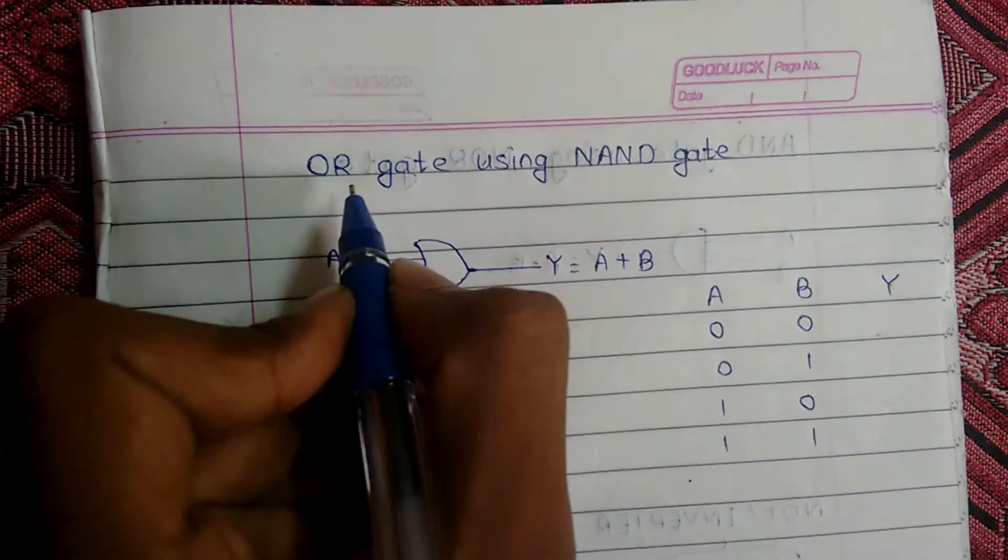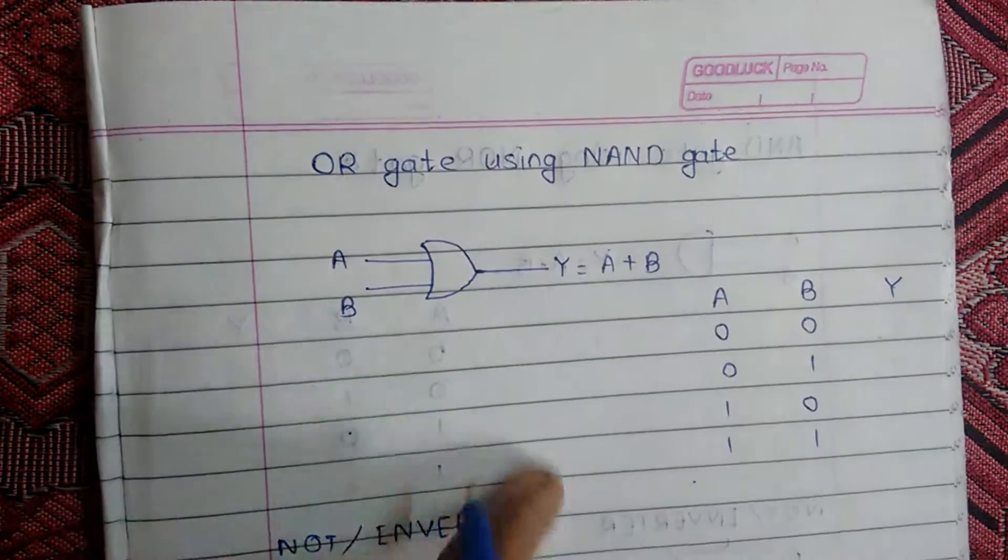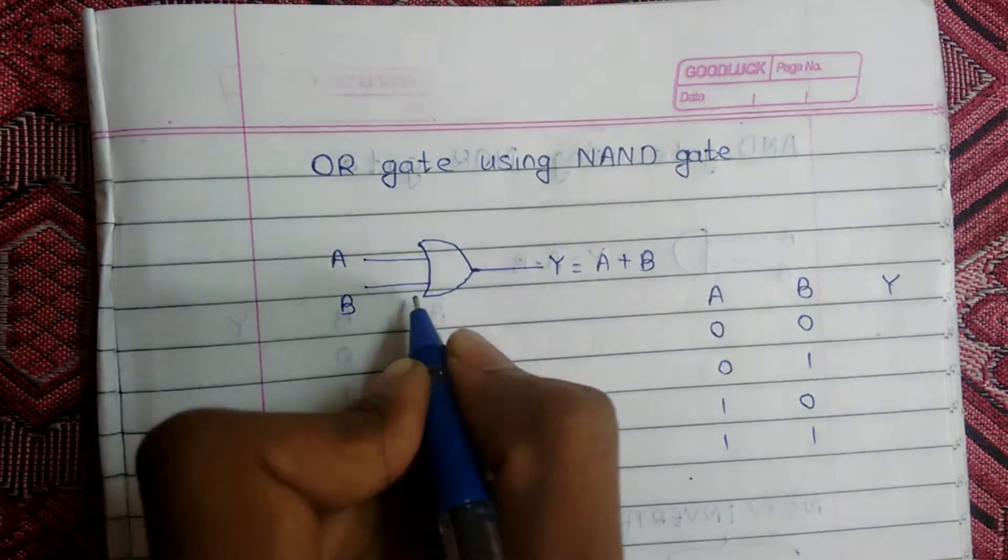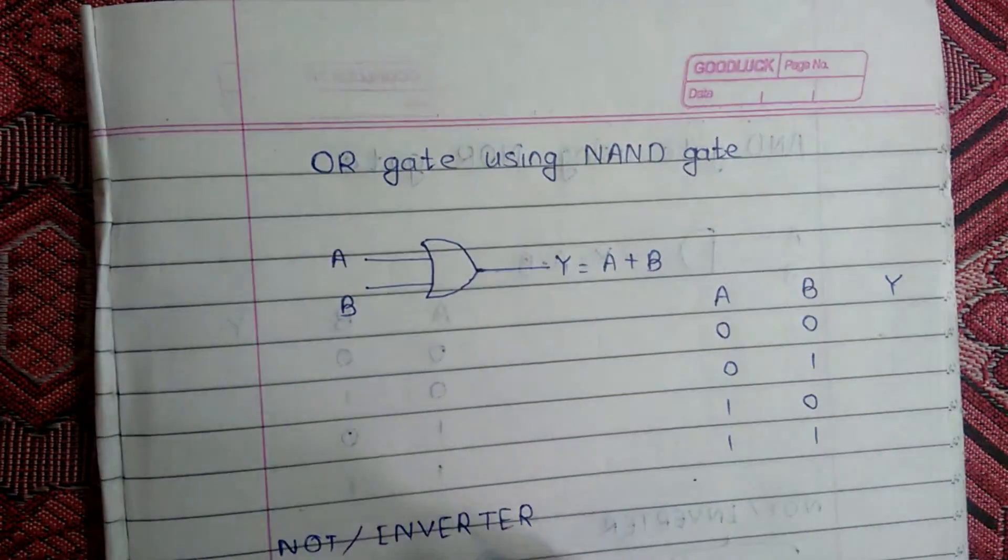Hello friends, today we are going to construct an OR gate using NAND gates. As you all know, if the inputs of an OR gate are A and B, then the output is A plus B.